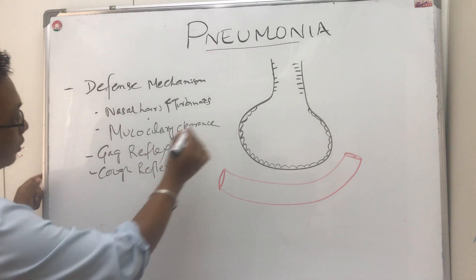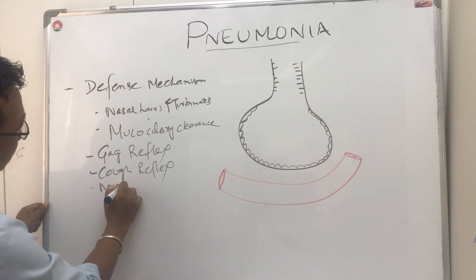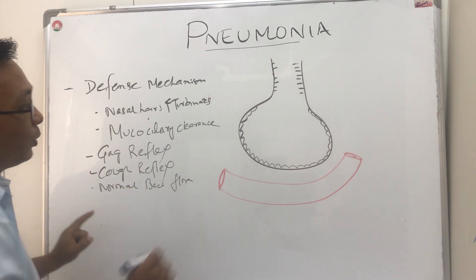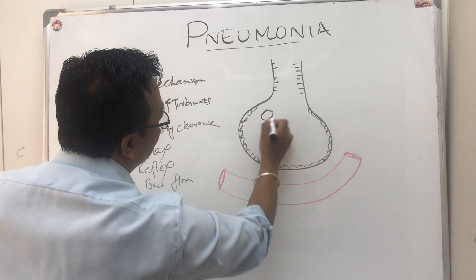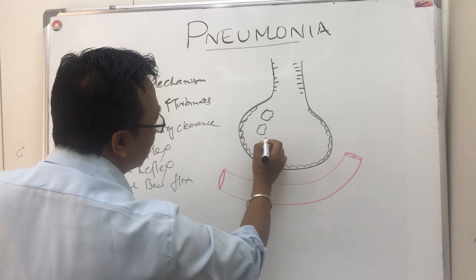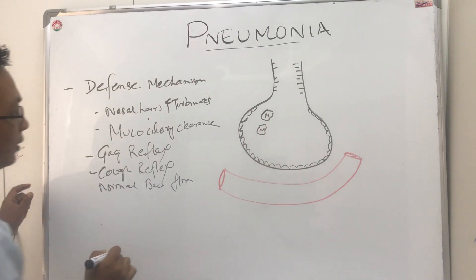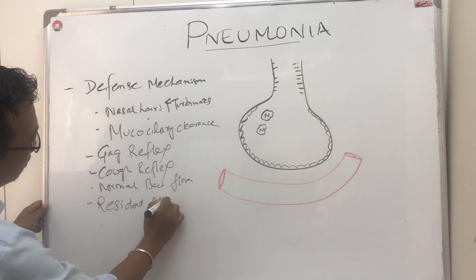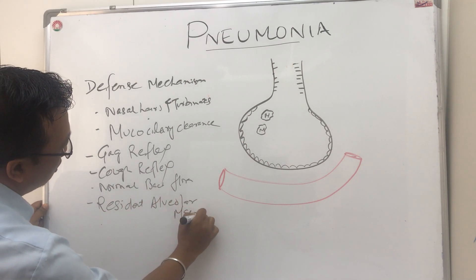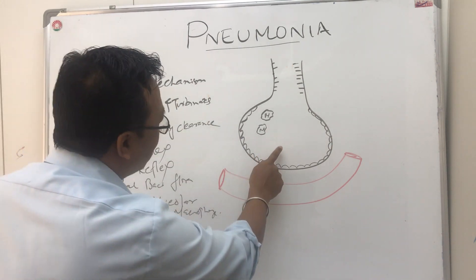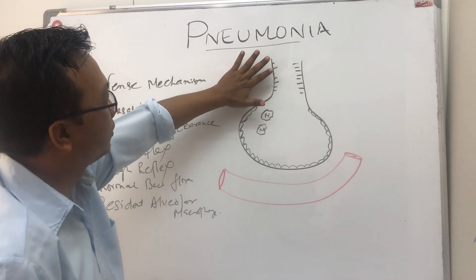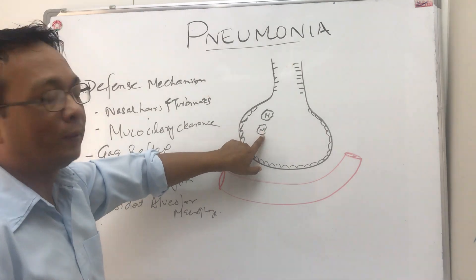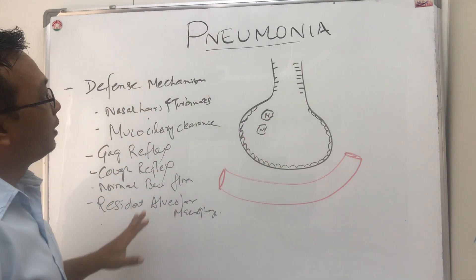Then also the normal bacterial flora. And the last and most important is the resident pulmonary alveolar macrophages. Any bacteria that has to reach here must overcome all these mechanical factors, then this mucociliary protection, then also the macrophages — then only it can cause inflammation here.